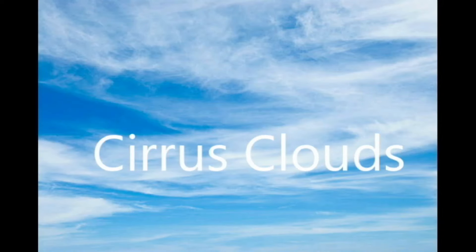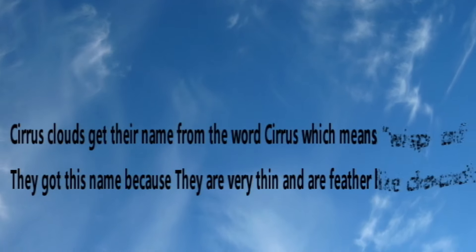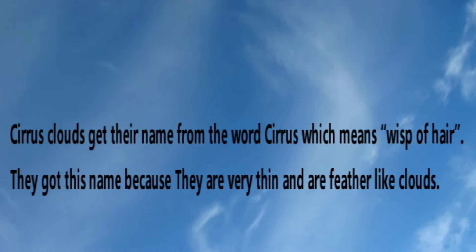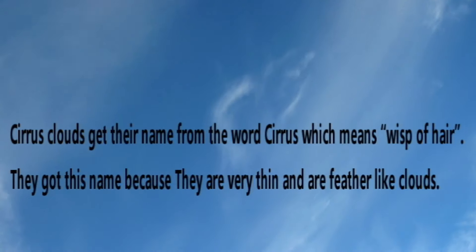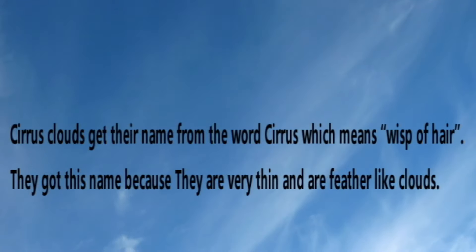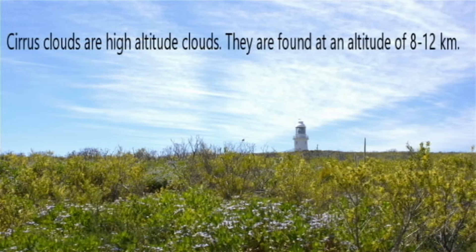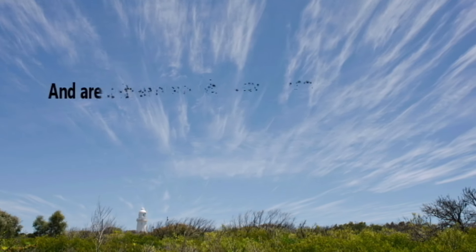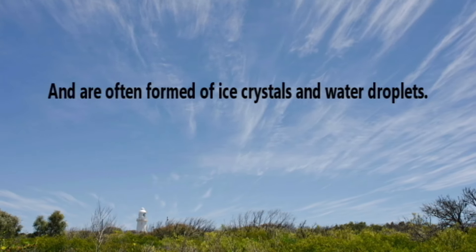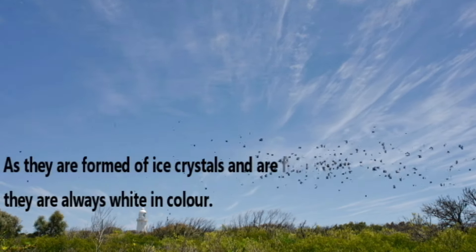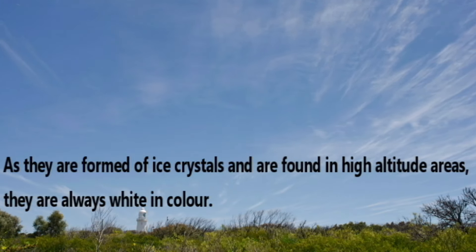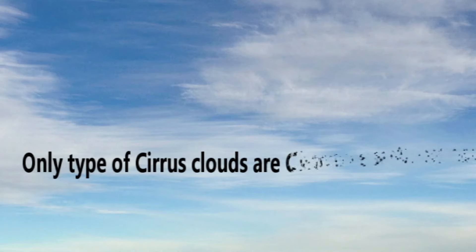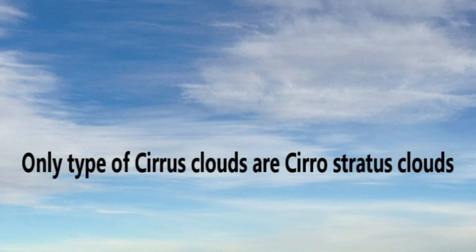First are cirrus clouds. Cirrus clouds got their name from the word 'cirrus,' which means wisp of hair. They got this name because they are very thin and feather-like clouds. Cirrus clouds are high-altitude clouds, found at an altitude of 8 to 12 kilometers, and are often formed of ice crystals and water droplets, because of which they are always white in color.